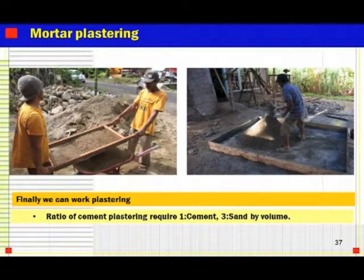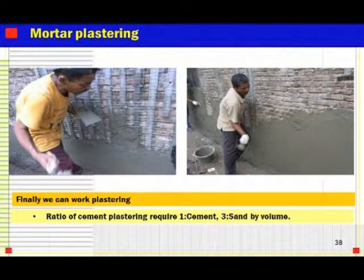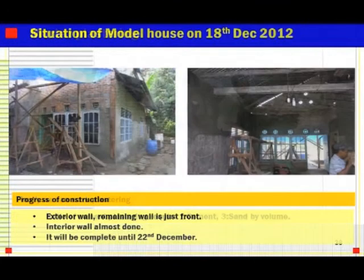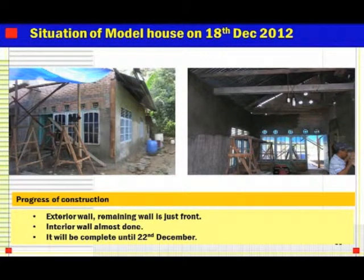Finally, we can do the plastering. The plastering ratio is one cement and three sand by volume — same as ordinary plastering. This photo shows the situation of the model house on 18th December 2012. Progress: the exterior wall remaining is just the front, interior wall is almost done, and it will be complete by 22nd December.